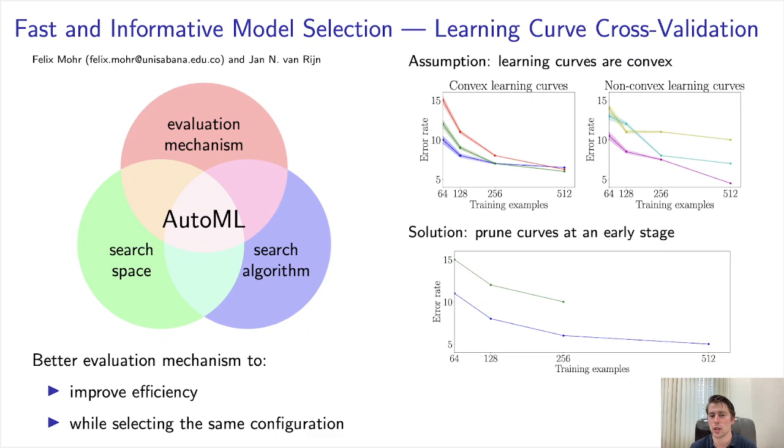we can observe for other configurations intermediate error rates at the learning curve and make assumptions about the maximum obtainable error rate that they can obtain when we extrapolate the learning curve based on the most optimistic convexity assumption.